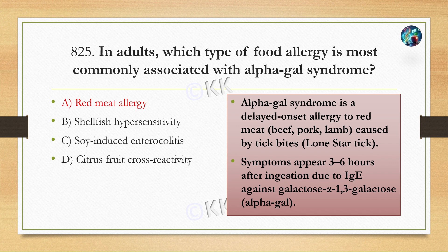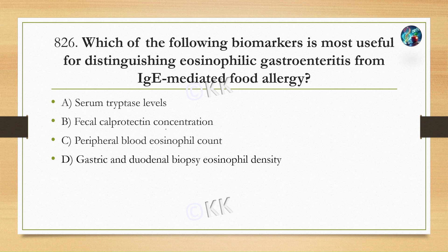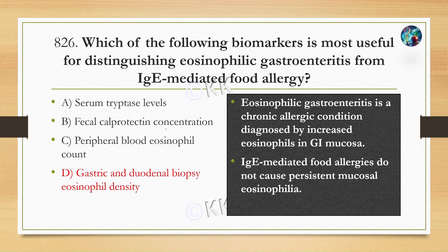Next question: which of the following biomarkers is most useful for distinguishing eosinophilic gastroenteritis from IgE-mediated food allergy? Option A: serum tryptase level. Option B: fecal calprotectin concentration. Option C: peripheral blood eosinophil count. Option D: gastric and jejunal biopsy eosinophil density. The correct option is D — gastric and jejunal biopsy eosinophil density.